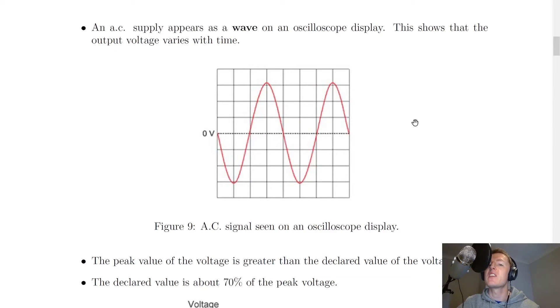If however you were to take an oscilloscope and connect it to a signal generator which is connected to the wall, i.e. the mains, then what you would see is something like this instead. So we've got a wave pattern here which actually shows that the output voltage varies with time. So remember this is called alternating current, which is changing current, so that means there's going to be a changing voltage as well.